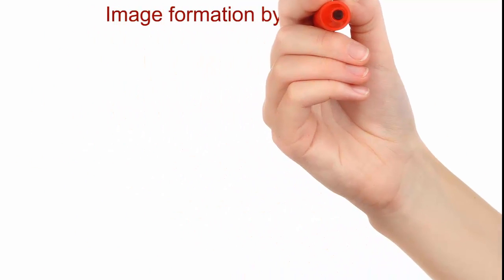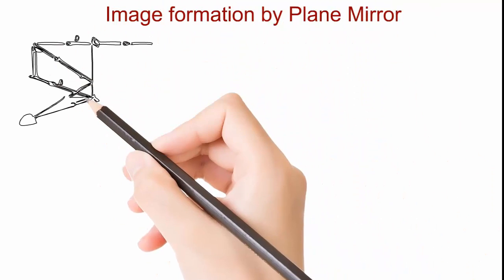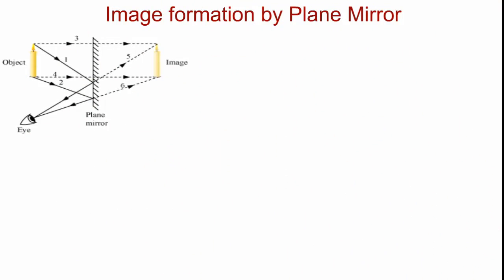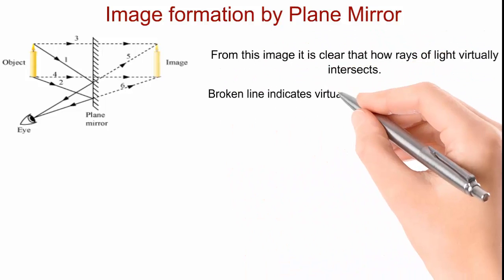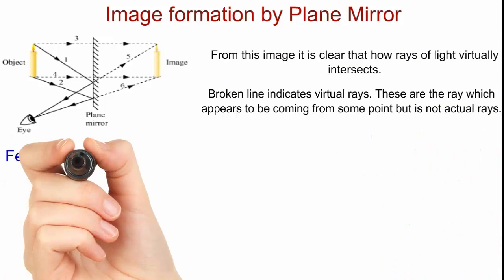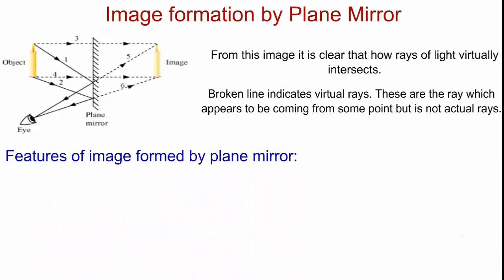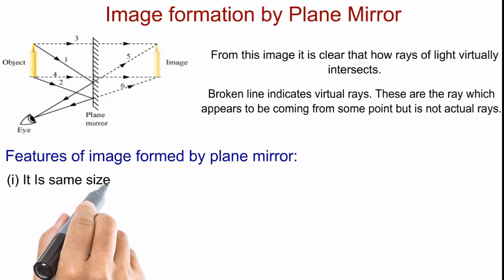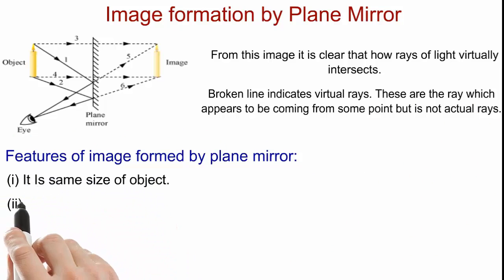Here you can see example of reflection by a plane mirror. From this image, it is clear that how rays of light virtually intersects. In this figure, broken line indicates virtual rays. These are the rays which appears to be coming from some point, but is not actual rays there. I don't have to say that image formed here is a virtual image.